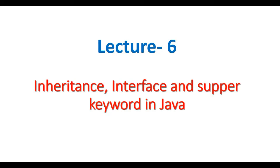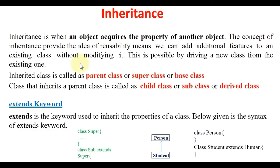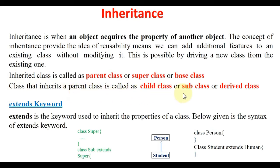First of all, inheritance. We have already known that inheritance is a way that an object can acquire the property of another object. The concept of inheritance provides the idea of reusability, meaning we can add additional features to an existing class without modifying it. This is possible by deriving a new class from an existing one. The inherited class is called the parent class, super class, or base class.